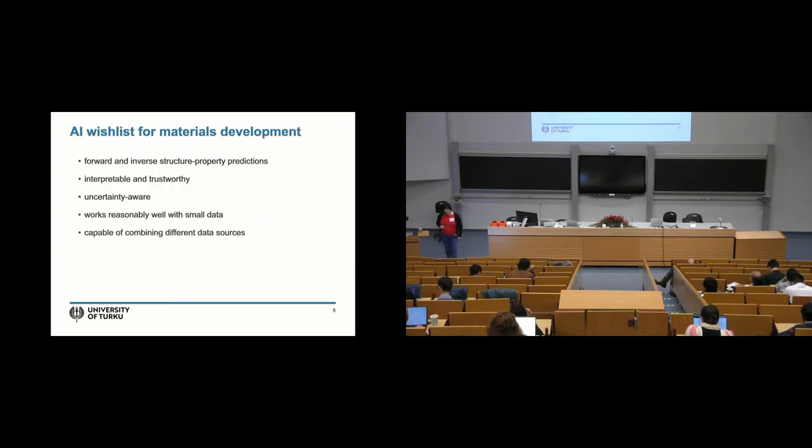Over the years we've come up with some wish lists of what we would like our methods to do. We would like our AI to help us with forward and inverse structure property predictions. Not only would we like to get properties simply given structure but also of course we would like to get some structures given desirable properties. It's really important to us that these models be interpretable and trustworthy. We've already heard from Anika today about interpretable methods but also trustworthy, we would like to know where the methods are doing well and also where the methods are not doing well. This would actually make us trust the method more.